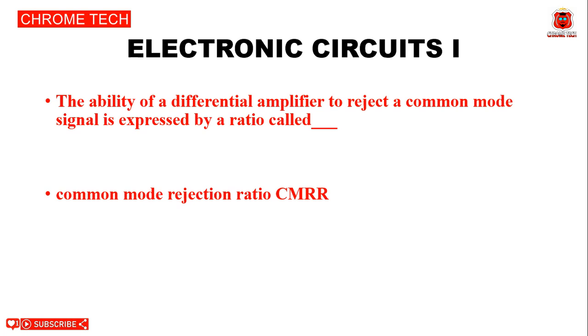Next question: The ability of a differential amplifier to reject a common mode signal is expressed by a ratio called dash, CMRR. The answer is common mode rejection ratio.